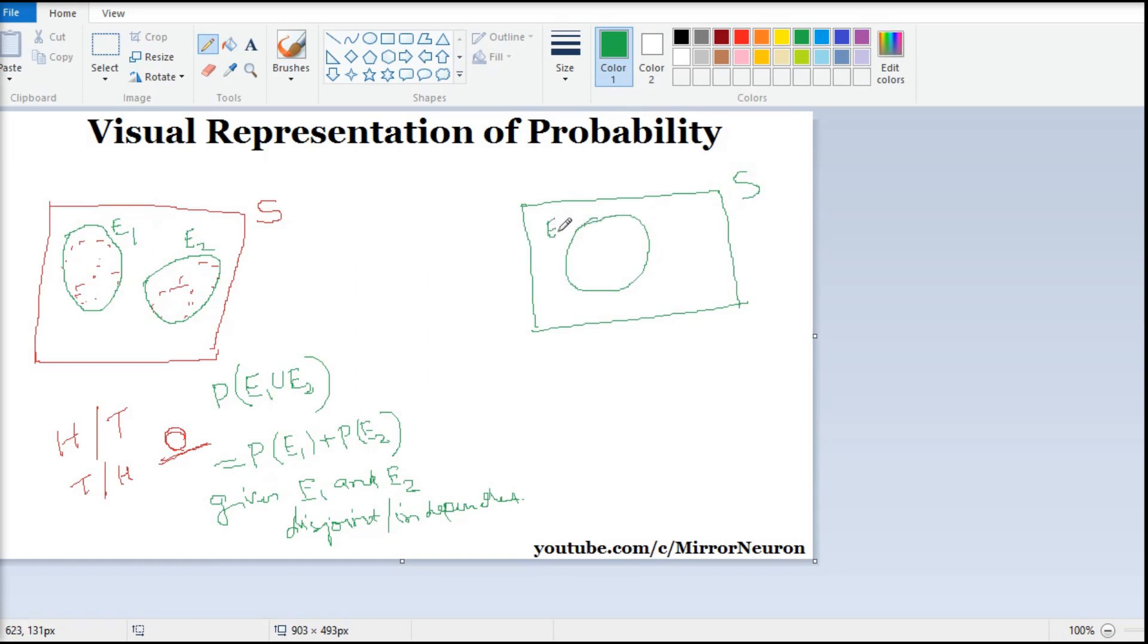In this case, probability of E1 union E2 will still have P(E1) plus P(E2), but now we have a common overlap here. That means I am counting this twice - while counting E1 and while counting E2, I have counted this twice. So I will subtract that region, so it will be minus E1 intersection E2.